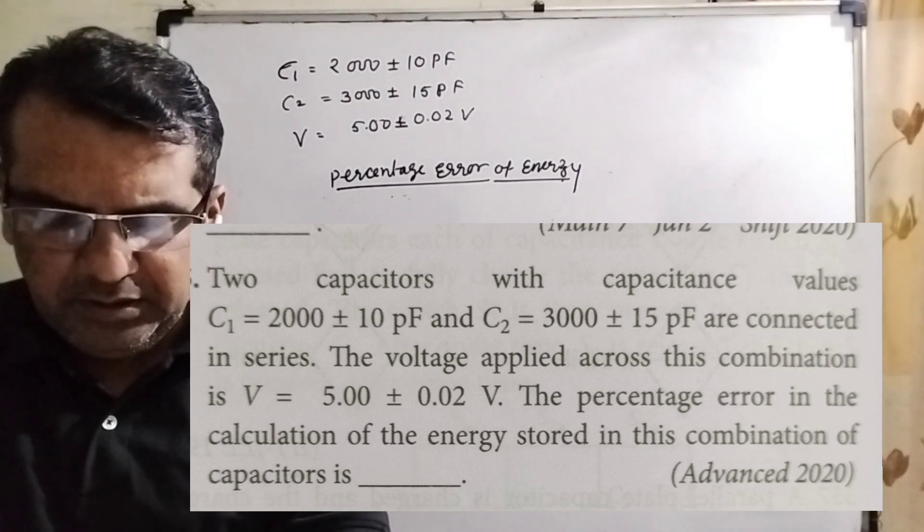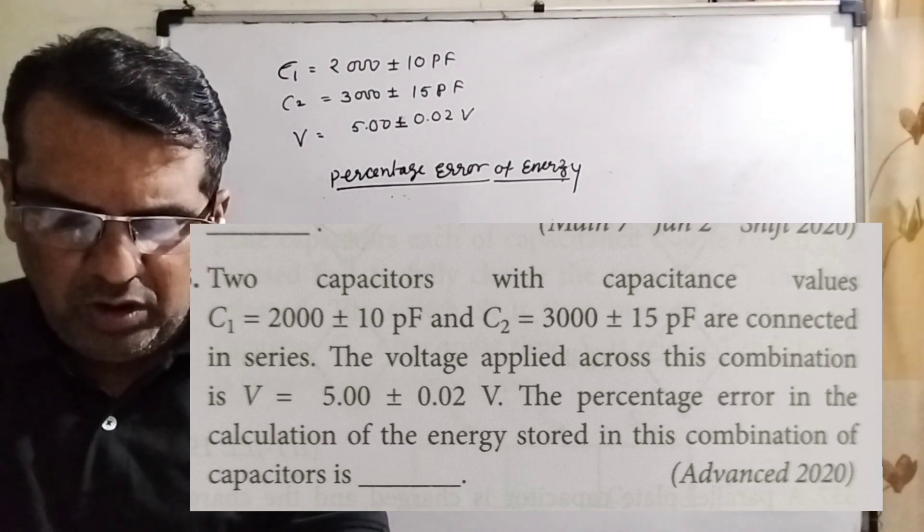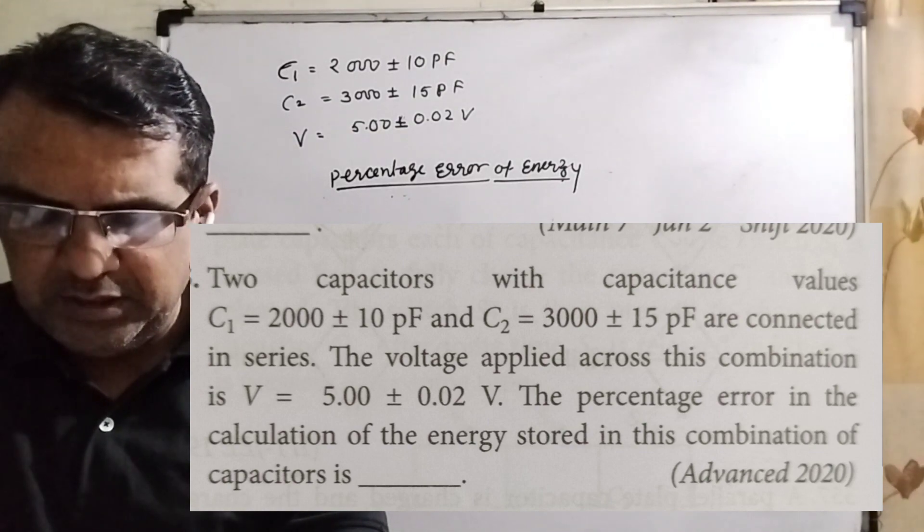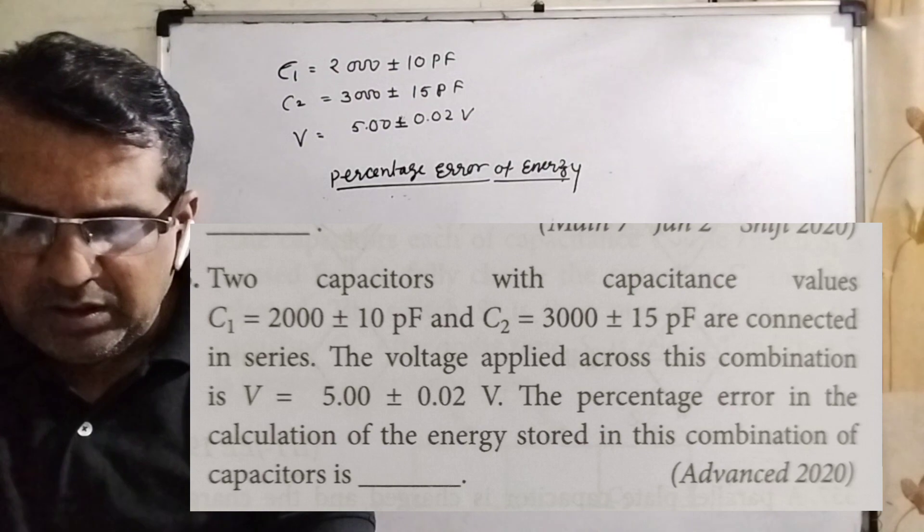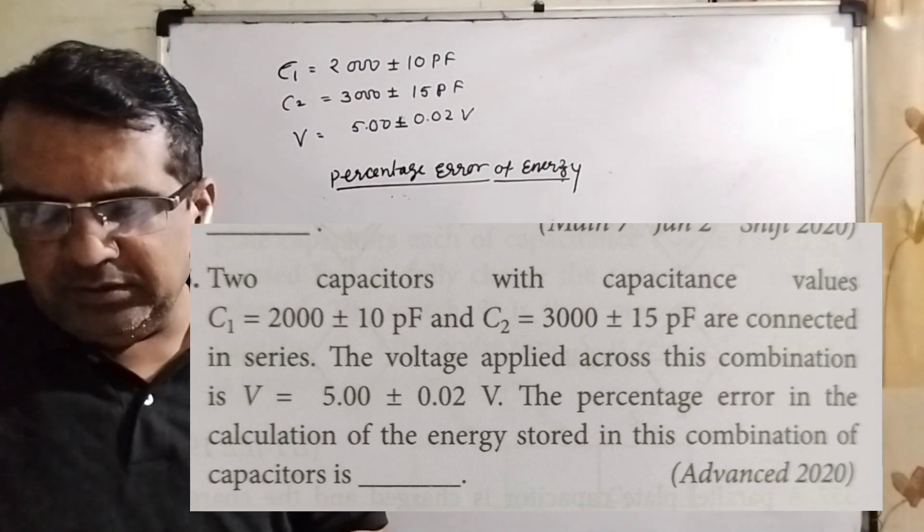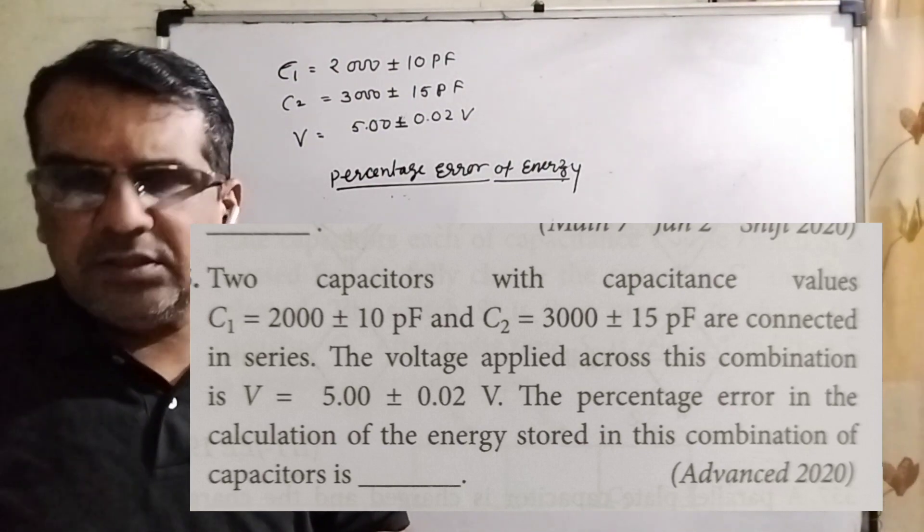The voltage applied across this combination is V equal to 5 plus minus 0.02 volt. Find the percentage error in the calculation of the energy stored in this combination of capacitors. This question was asked in JEE Advanced 2020.